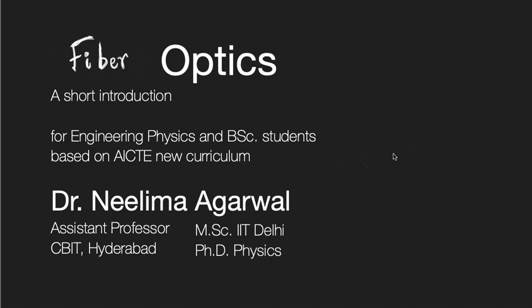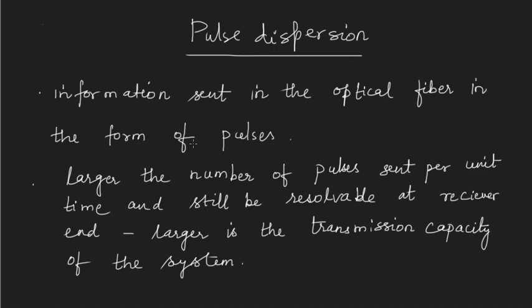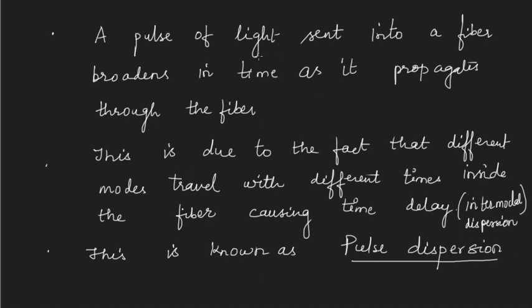In step index multimode fiber, different modes reach the other end at different times. Information is sent in optical fiber in the form of pulses — a large number of pulses sent per unit time — and if we can resolve them at the other end, we have more transmission capacity. A pulse of light sent into a fiber broadens in time as it propagates. Here I am taking one kind of dispersion known as intermodal dispersion, to understand the time delay in different modes traveling at different times.